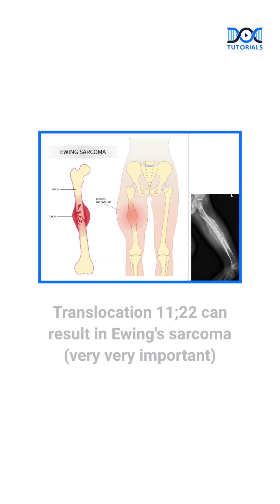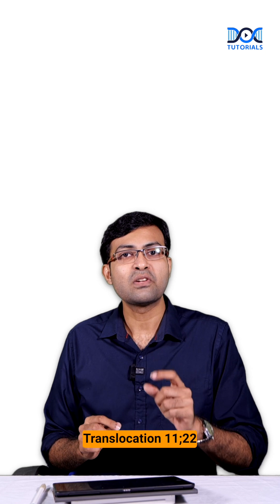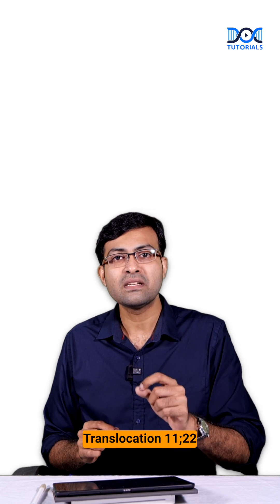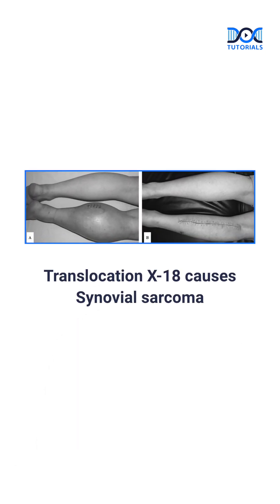Then there are two important translocations you need to remember. Translocation 11;22 causes Ewing sarcoma — a very very important point. And translocation X;18 will cause synovial sarcoma.